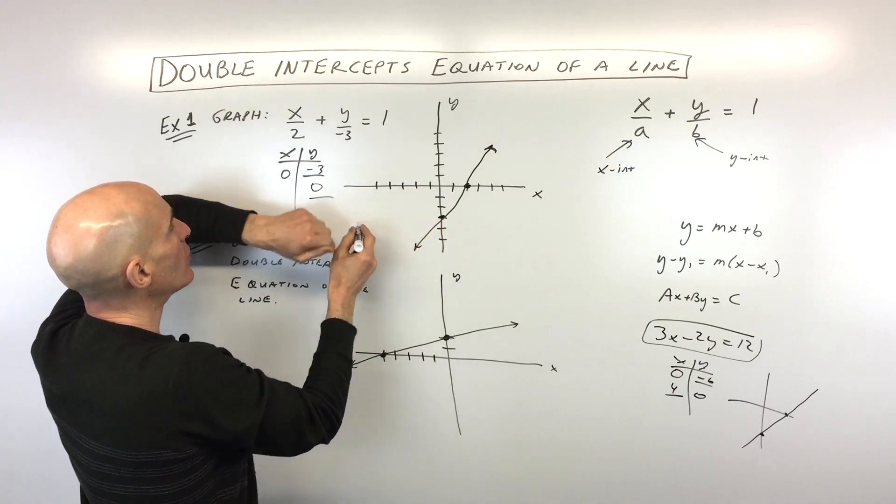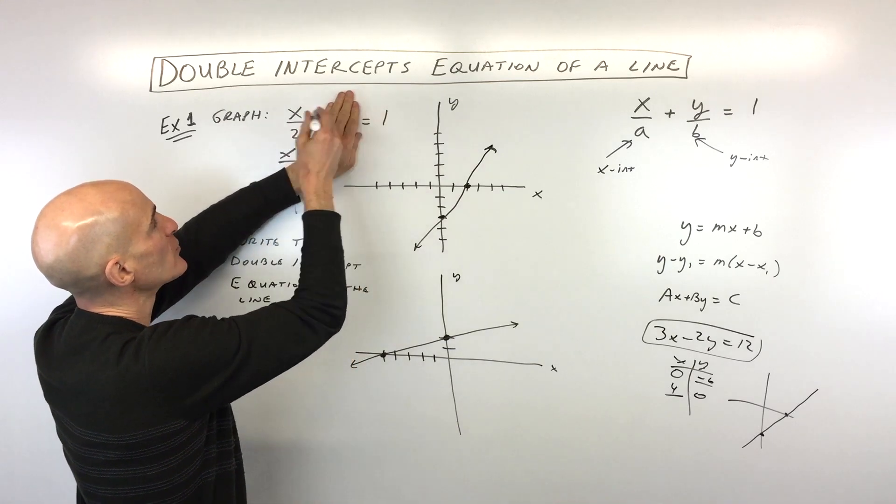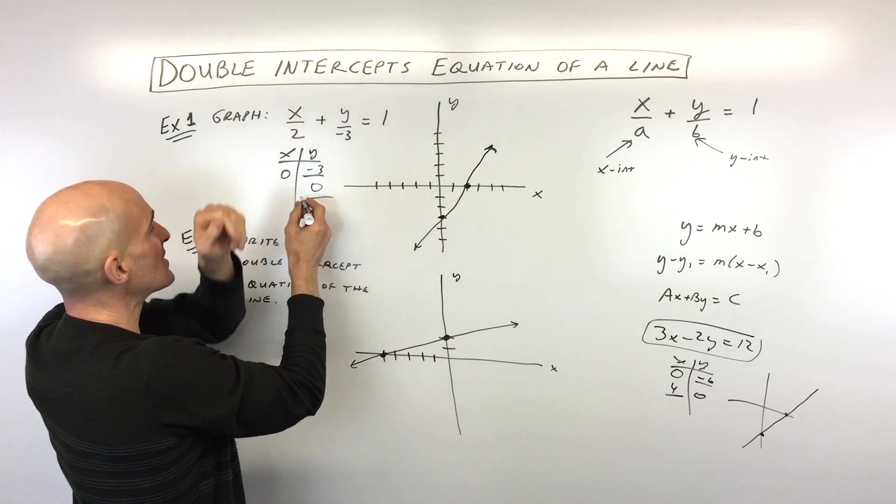If we set y to 0, 0 over negative 3 is 0. And by multiplying both sides by 2, you can see that our x-intercept is 2.